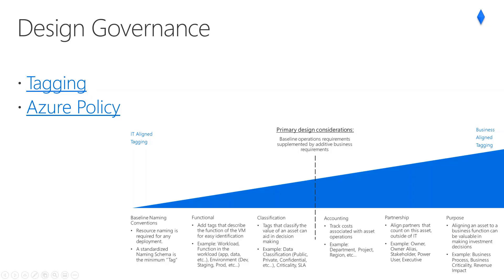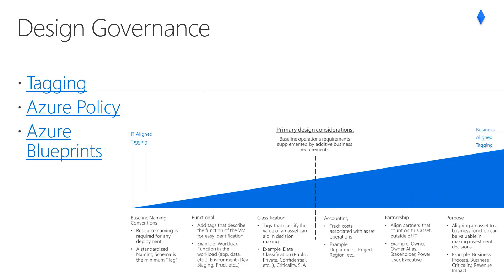Azure Policy helps to enforce organizational standards and to assess compliance at scale. Through its compliance dashboard, it provides an aggregated view to evaluate the overall state of the environment with the ability to drill down to per-resource and per-policy granularity. It also helps to bring your resources to compliance through bulk remediation for existing resources and automatic remediation for new resources. Common use cases for Azure Policy include implementing governance for resource consistency, regulatory compliance, security, cost, and management.